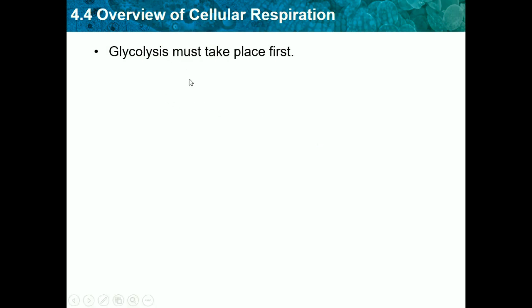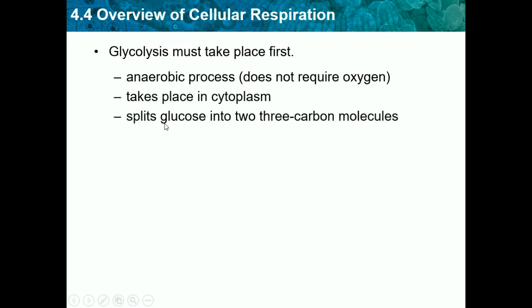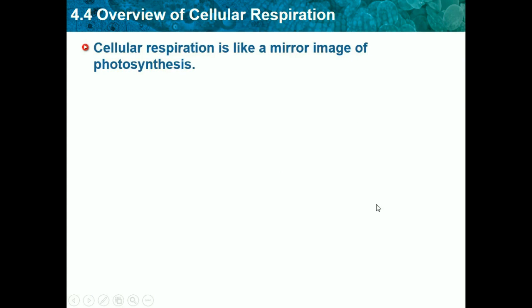Glycolysis comes before cellular respiration and it is an anaerobic process — it does not require oxygen. It takes place in the cytoplasm and splits glucose into two 3-carbon molecules, producing 2 ATP. So it splits the glucose into 2 pieces and gives ATP.